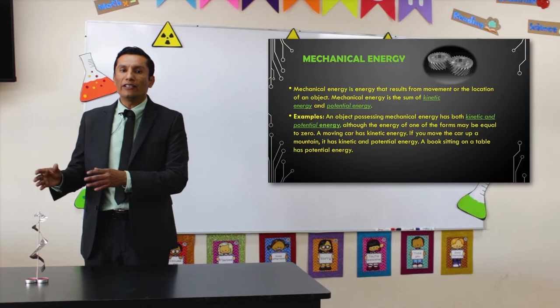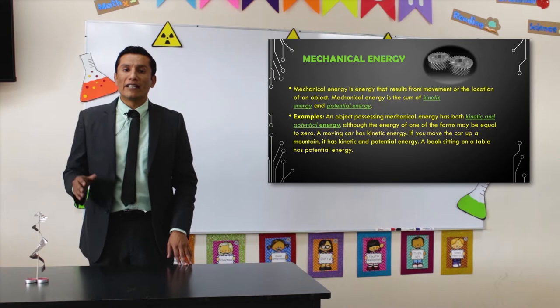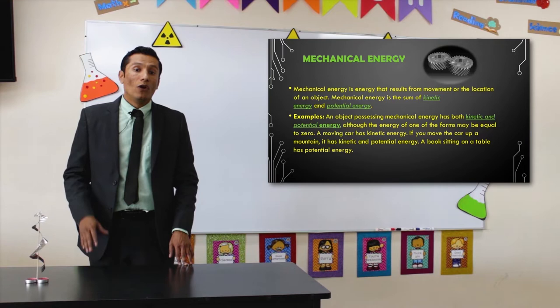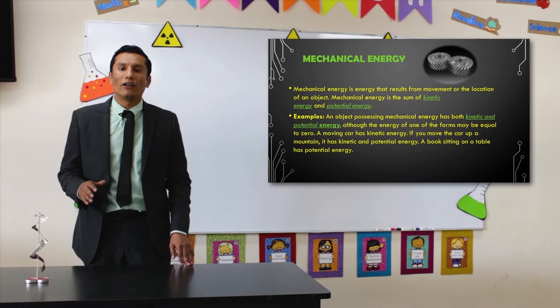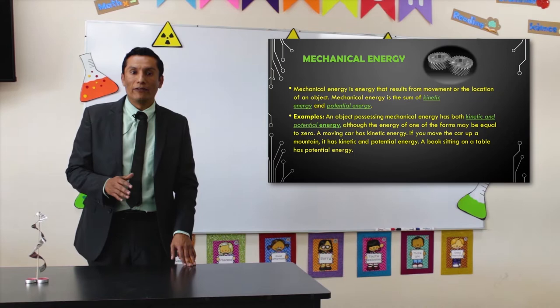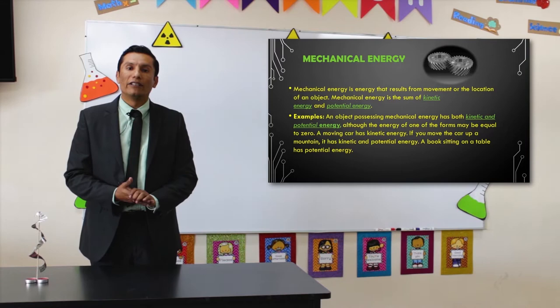An object possessing mechanical energy has both kinetic and potential energy, and one of those forms may equal zero. A moving car has kinetic energy. If you move a car up a mountain, we have the sum of potential and kinetic energy. A book sitting on a table contains only potential energy. Mechanical energy is the result of the sum of both kinetic and potential energy.